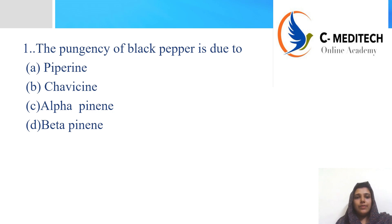First question: the pungency of black pepper is due to which of the following? Options are: A) Piperin, B) Javisin, C) Alpha-pinin, D) Beta-pinin.